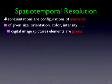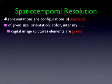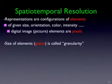A representation — whether it's a picture on a computer screen or a brain image — is a configuration of elements that have a given size, orientation, color, and intensity. We're all familiar with digital images and we talk about these little elements as pixels, short for picture elements. The size of these elements is called their grain, and so you have a granularity or resolution of these things.